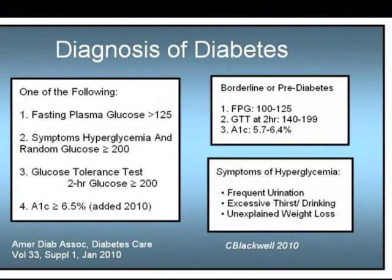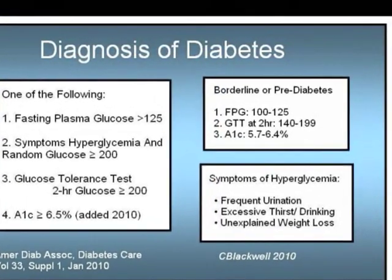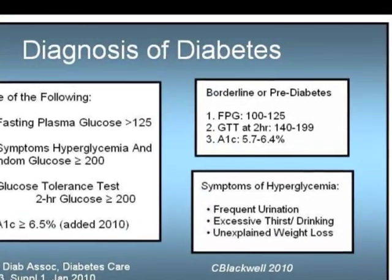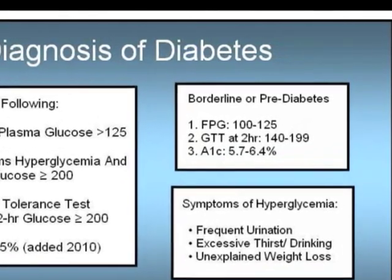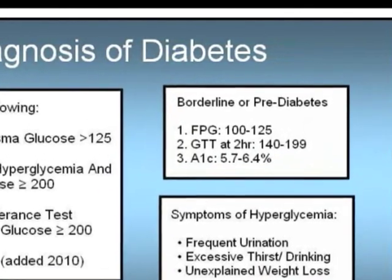If fasting blood sugar is between 100 and 125, that is considered borderline or pre-diabetic.